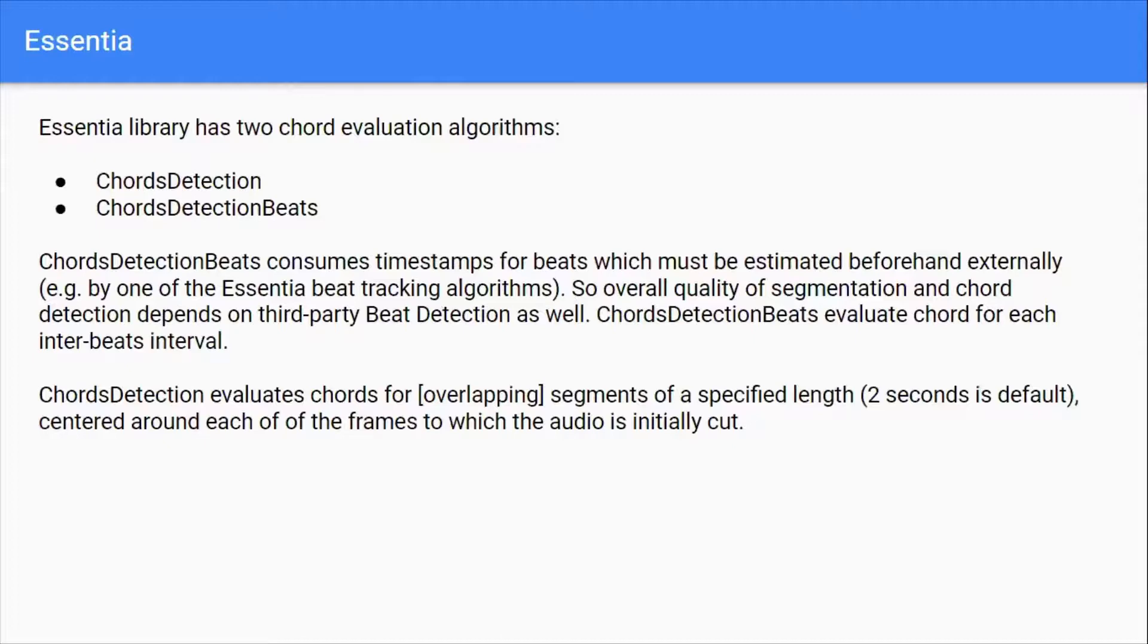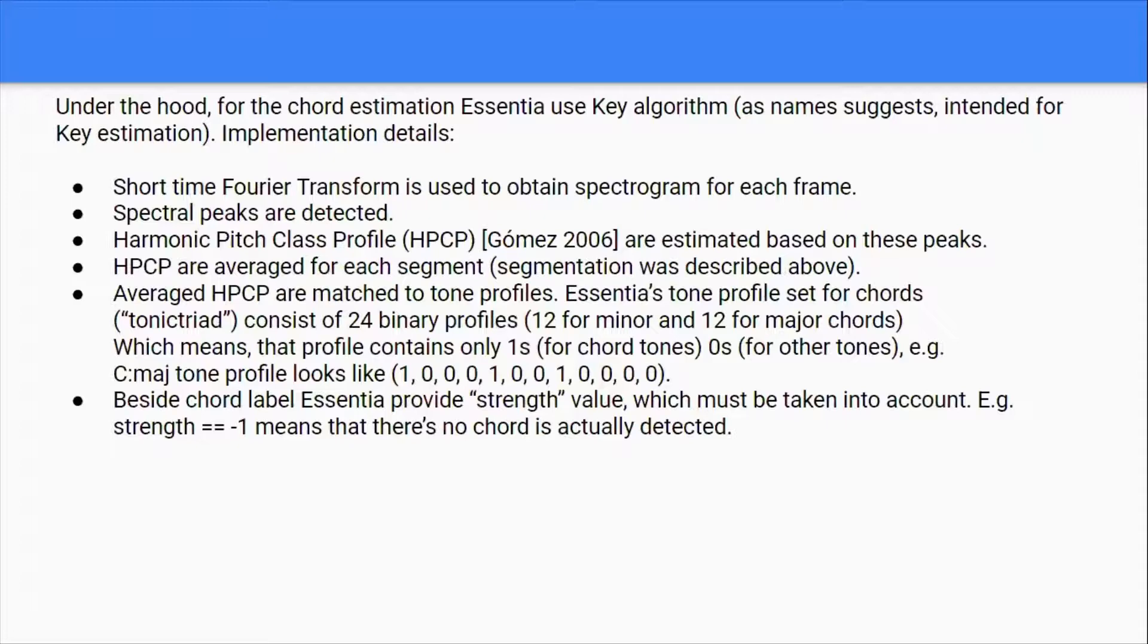Essentia uses two evaluations: chord detection and chord detection beats. Chord detection beats consumes timestamps for beats which must be estimated beforehand externally, like by their algorithm for beat tracking. Overall quality of segmentation and chord detection depends on third-party beat detection as well. Chord detection beats evaluates chord for each inter-beat interval. Chord detection evaluates chords for overlapping segments of a specified length, for example two seconds is default. I can change this value centered around each of the frames to which the audio is initially cut.